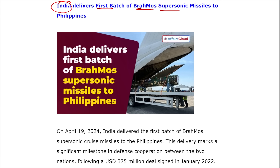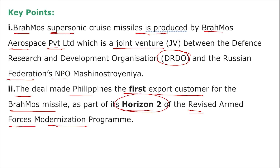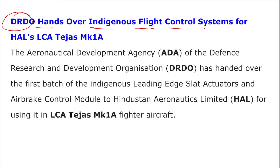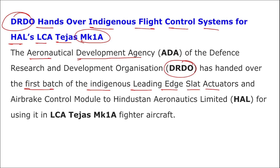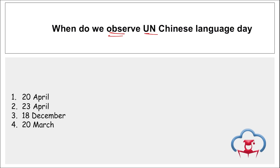BrahMos is a joint venture between India and Russia, signed in 1998 for 25 years. It is produced by BrahMos Aerospace Private Limited, a joint venture between DRDO and Russia's NPO Mashinostroyeniya. DRDO's ADA (Aeronautical Development Agency) handed over the first batch of indigenous leading-edge slat actuators and air brake control modules to HAL (Hindustan Aeronautics Limited) for use in the Light Combat Aircraft Tejas Mark 1A fighter aircraft.